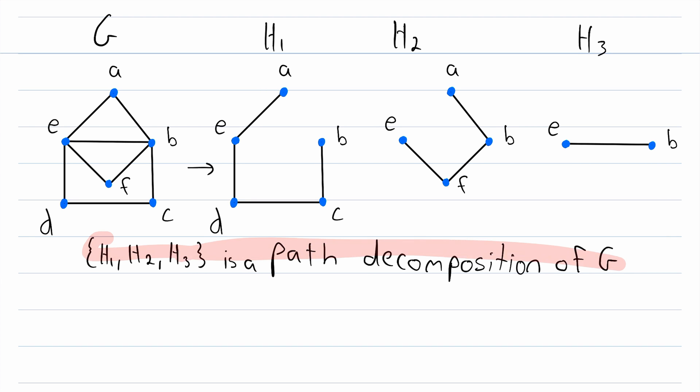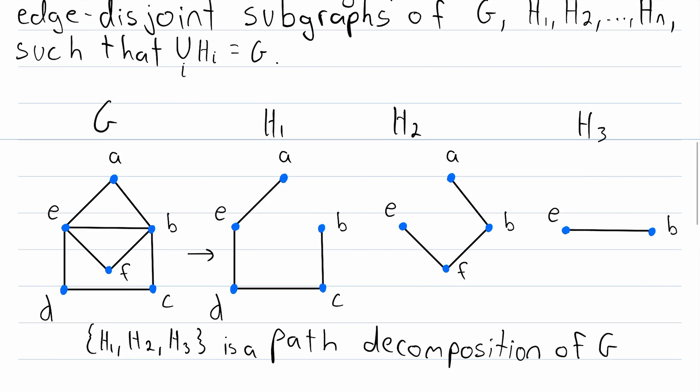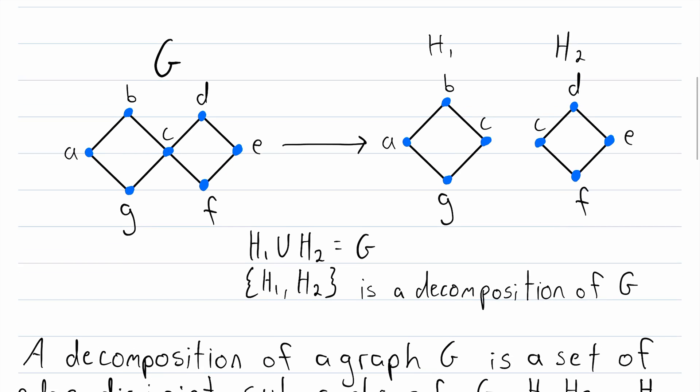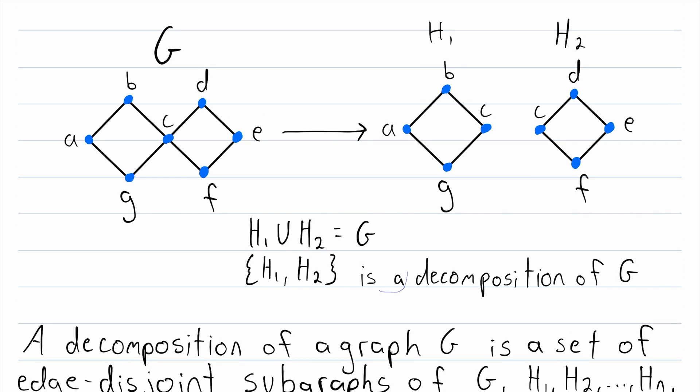So that's pretty cool. We could even get more specific, suppose we go back up to our first example. Notice in this example that the two subgraphs we decomposed G into are both four cycles. So since both of these subgraphs are isomorphic to the cycle graph with four vertices,